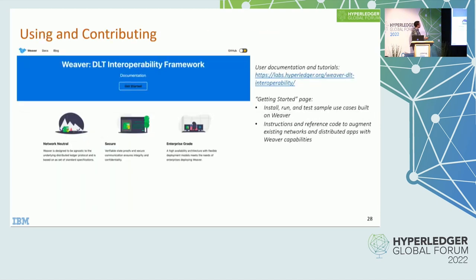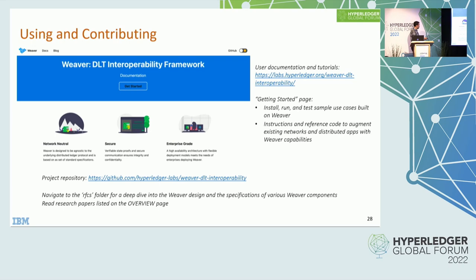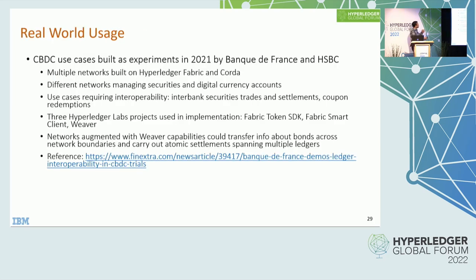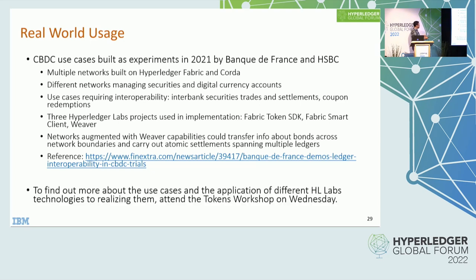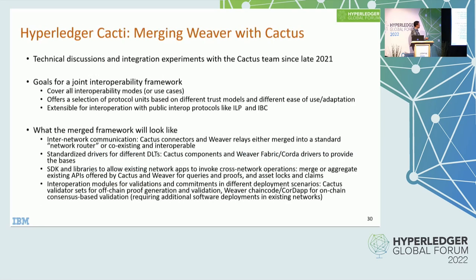To contribute to or use Weaver, go to the documentation — we have tutorials that help you get the Weaver samples up and running from start to finish, and instructions for adapting an existing network. To contribute, look at the RFCs folder or read the research papers in the overview page. There's also a use case involving CBDCs and an experiment done by the Bank for International Settlements and HSBC — to find out more, attend the tokens workshop tomorrow. We've been talking to the Cactus team since late 2021 and are merging with Cactus to form Hyperledger Cacti.